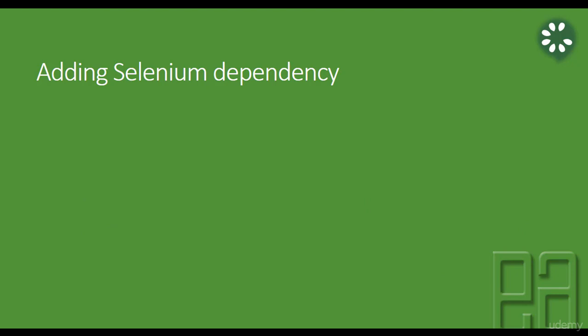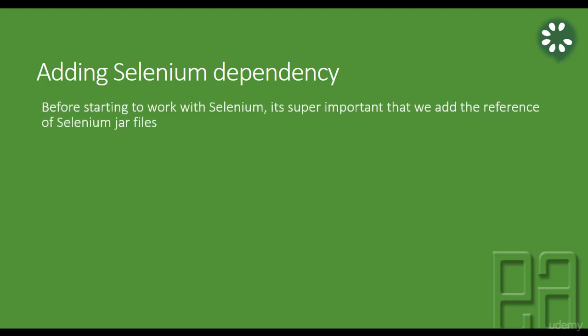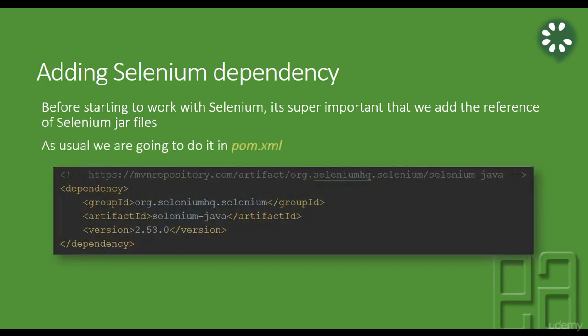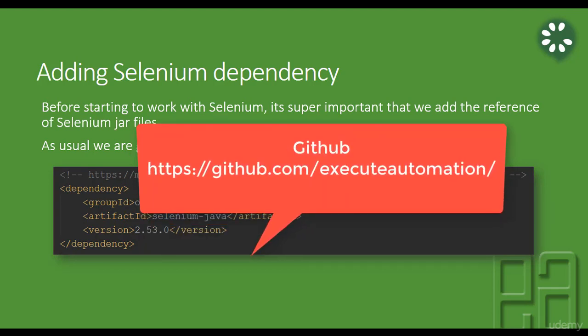We need to add the dependency for Selenium. The jar file we're going to add to the pom.xml file uses the group ID org.seleniumhq.selenium and the artifact ID selenium-java. We need to add this particular jar file to our existing Cucumber project from Section 1 and start working from there. The complete source code from Section 1 is available on GitHub.